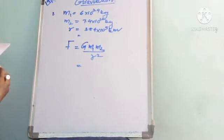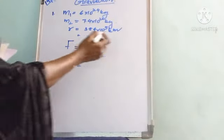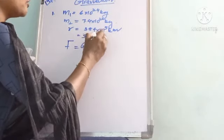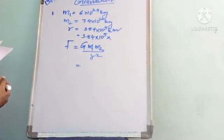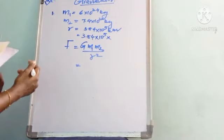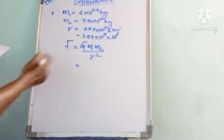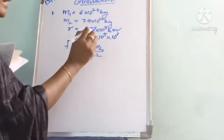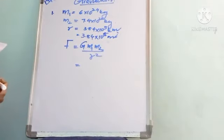The distance is given in kilometers, so we must convert it to meters. 3.84×10⁵ km × 10³ = 3.84×10⁸ m, since 10⁵ × 10³ = 10⁸.